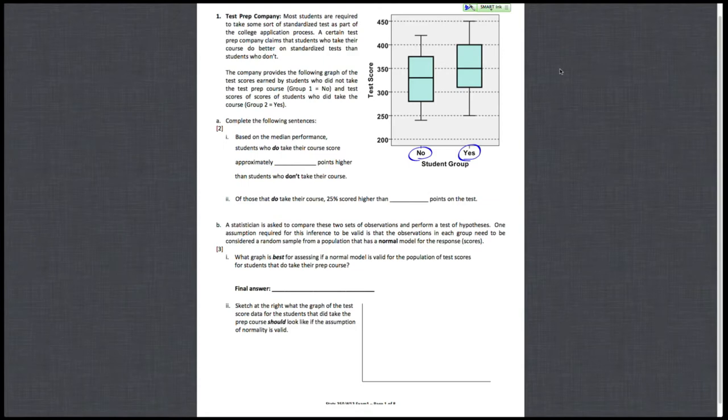Our first sentence that we're asked to complete here is to look at the median performance and compare them. The median for those who did take the prep course seems to be about 350, whereas the median for those who did not take this prep course, I'm going to estimate that to be about 330.